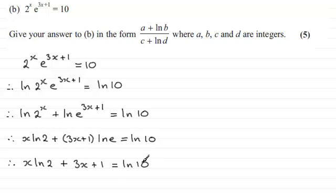So I can see then that if I start to group up my x terms by pulling out x as a common factor here, I've got x times the natural log of 2 plus the 3 here. And if I subtract 1 now from both sides, I've got minus 1 plus the natural log of 10.